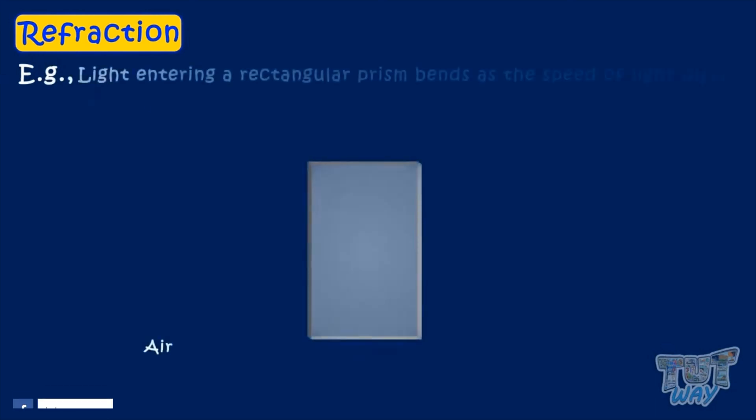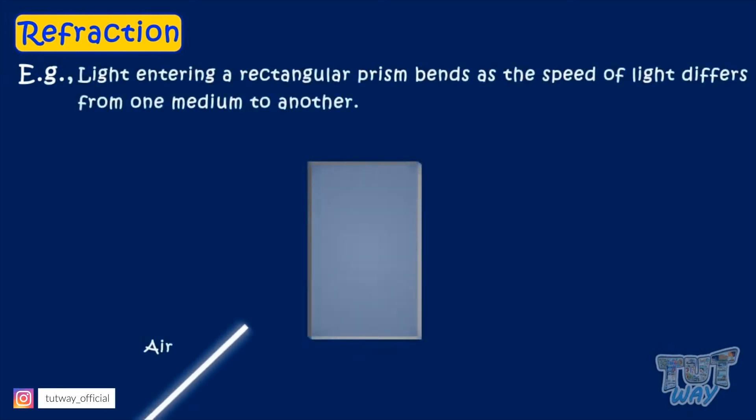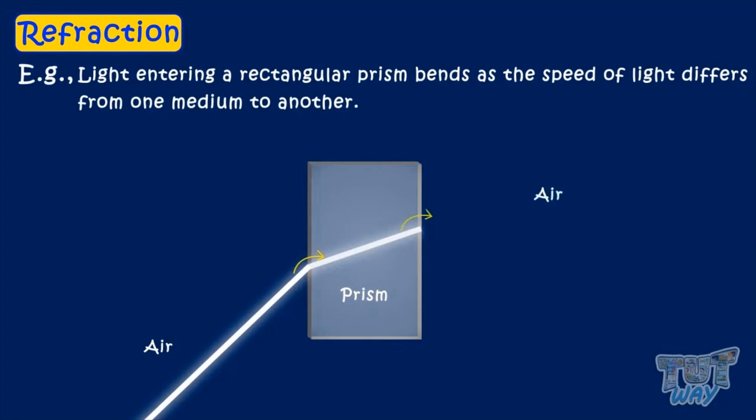Here is an example. When light from air enters a rectangular prism, which is another medium, it bends because the speed of light differs in different mediums. And when the light again passes from rectangular prism to the air, it again bends as its speed changes again.